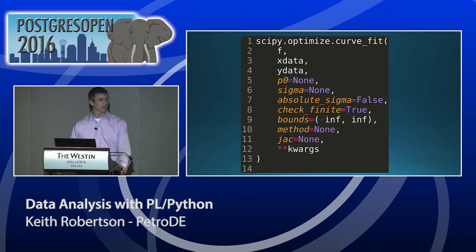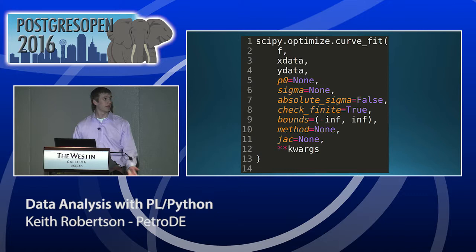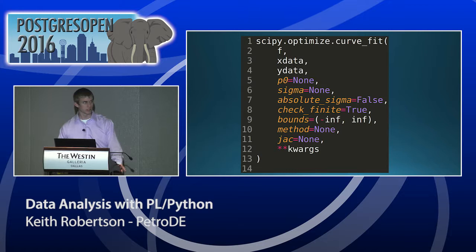To do least squares fitting in Python, there's the `curve_fit` function from the SciPy library. You give it your regression function F, your X and Y data, and optionally an initial estimate for your constants so it starts at a reasonable value and converges faster — also helping it find the correct minimum rather than a local one. Most other arguments are optional depending on your use case. It's a very easy function to use and you can write a wrapper around this in PLPython fairly easily to get access to it in Postgres.